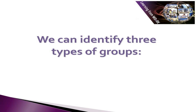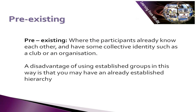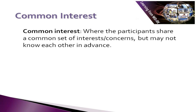We can identify three types of groups. Pre-existing, where the participants already know each other and have some collective identity such as a club or organisation — a disadvantage is that you may encounter an already established hierarchy. A common interest group is where participants share a common set of interests or concerns but may not know each other in advance.